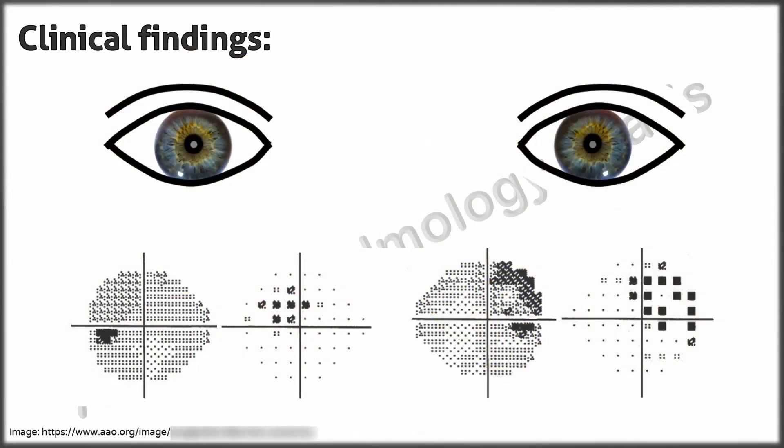This is the visual field performed at the present visit. The fields are identical to those performed five years ago. The field defects are absent when perimetry is performed with the myopic correction in place.